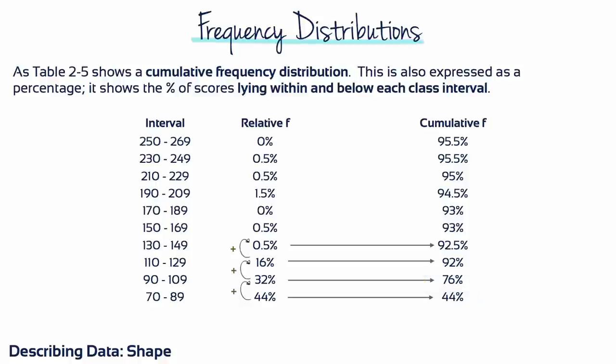In order to get the next cumulative frequency, we add 44% plus 32% plus 16% to give us a cumulative frequency of 92%. We keep doing this, adding up the table. 44% plus 32% plus 16% plus 0.5% gives us a cumulative frequency of 92.5%. 44% plus 32% plus 16% plus 0.5% plus 0.5% gives us a cumulative frequency of 93%.